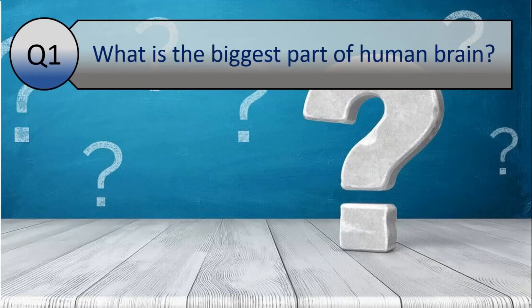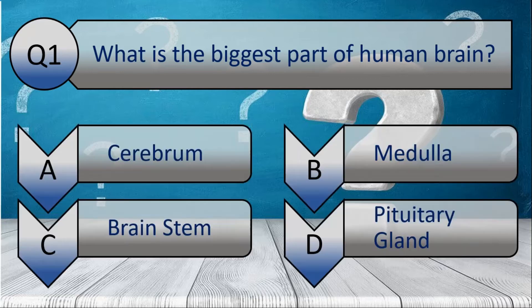Your first question is: what is the biggest part of the human brain? Your options are A. Cerebrum, B. Medulla, C. Brainstem, or D. Pituitary gland. And the correct answer is A. Cerebrum.